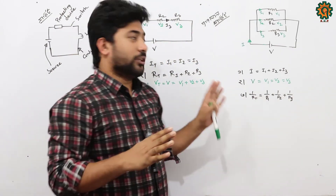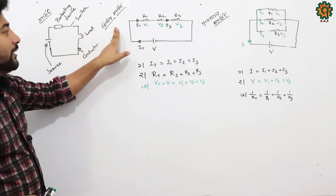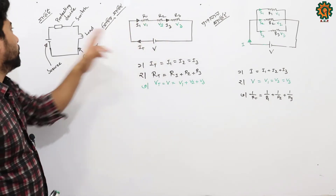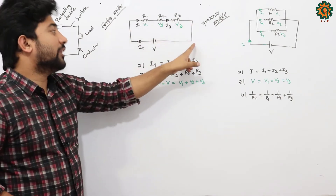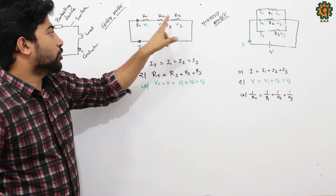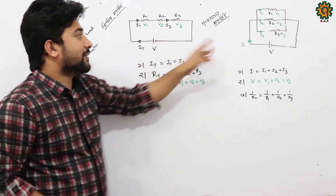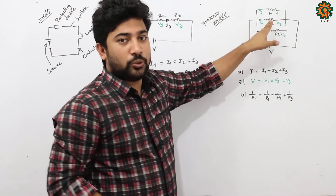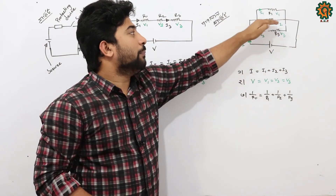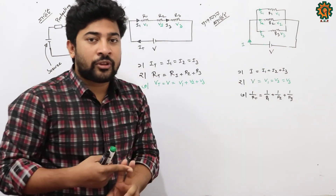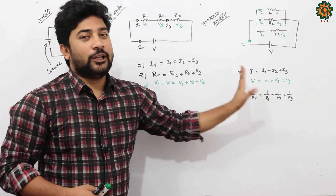Let's summarize. We have the series circuit and the parallel circuit. In the series circuit, the current is the same throughout, and the voltage is divided across the branches. In the parallel circuit, the voltage is the same across all branches, and the current is divided. This is how we study the direction of the parallel circuit.